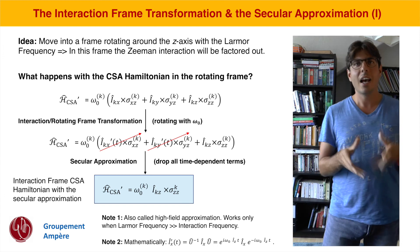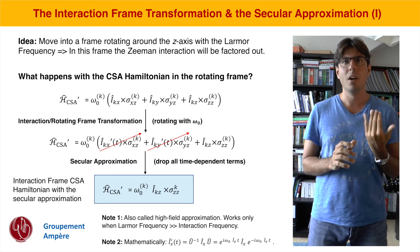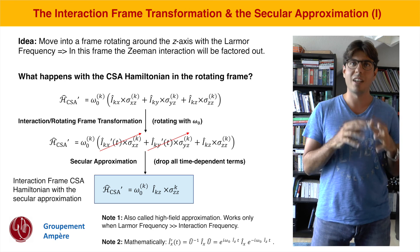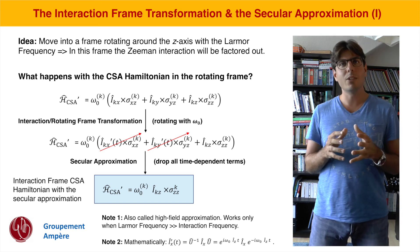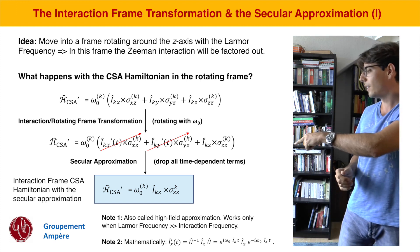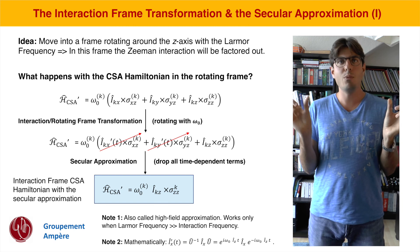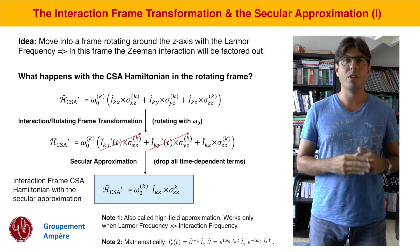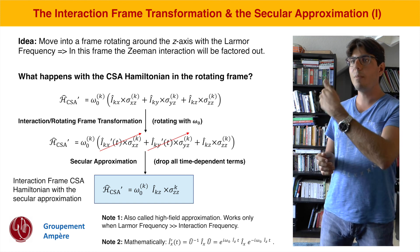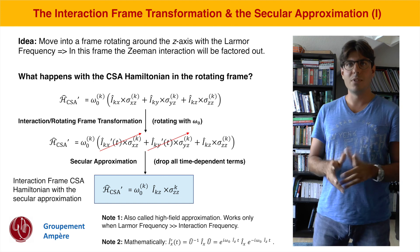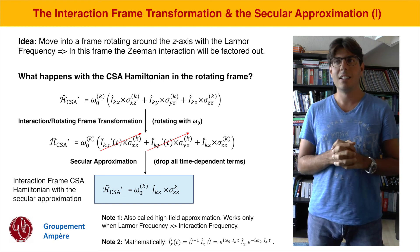The second point: intuitively we said Ikz does not pick up a time dependence while Ikx and Iky do. There is also a fully mathematically rigorous way to perform the interaction frame transformation: you apply a sandwich of exponential terms. To move into a frame rotating at the Larmor frequency, you multiply e^(i·omega₀·Iz·t) times the operator you want to transform — for example Ix — times e^(-i·omega₀·Iz·t).